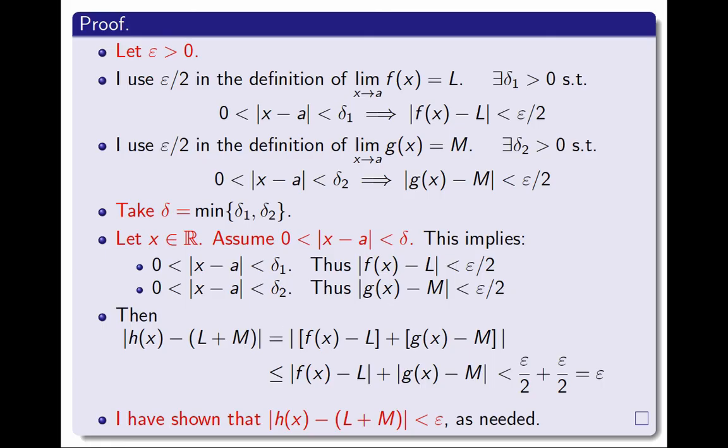Before I finish, two more comments. First, look at the parts of the proof written in red — the structure of the proof is exactly what I said at the beginning it should be. Second, notice that all the variables must be introduced carefully in the right order. Before I fix ε, it would not make sense to say that I'm choosing ε over 2 in the definition of the limit of f. I need to fix ε first, then say I'm using ε over 2, then that will produce Δ1 and Δ2, and only then I can say what I'm taking as Δ.